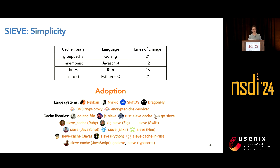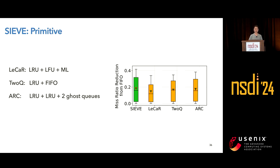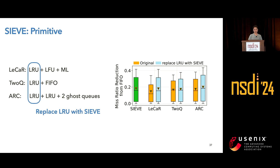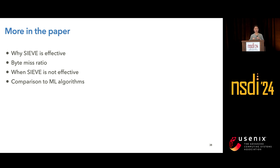Because SIEVE is so simple, it can not only serve as an independent eviction algorithm but also work as a building block for other eviction algorithms. We compare SIEVE with three very efficient cache algorithms: LIKA, an ML-based algorithm, and 2Q and ARC, which are heuristic algorithms that all have LRU queues. SIEVE already performs much better than LIKA and 2Q, and slightly better than ARC. When we replace the LRU with SIEVE in each algorithm, we observe significant improvement compared to the original algorithm. In our paper, we have also discussed why SIEVE is effective, when it is not effective, and the miss ratio results in comparison to other ML algorithms.